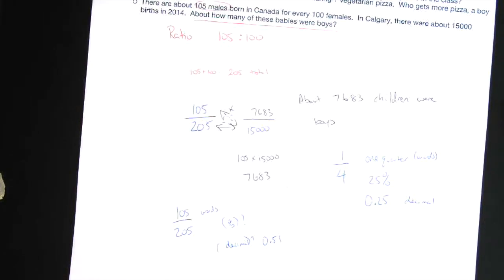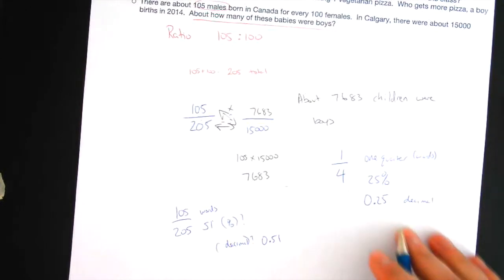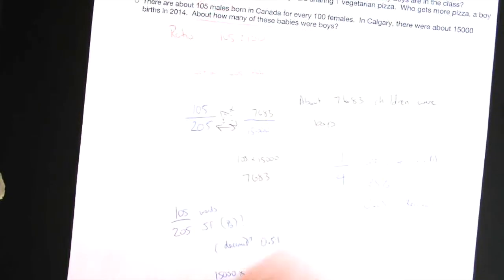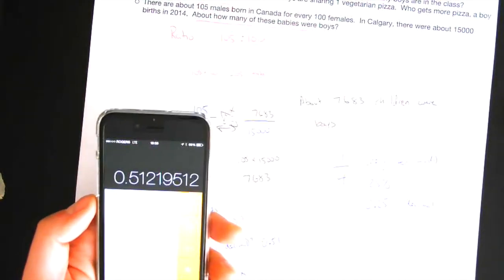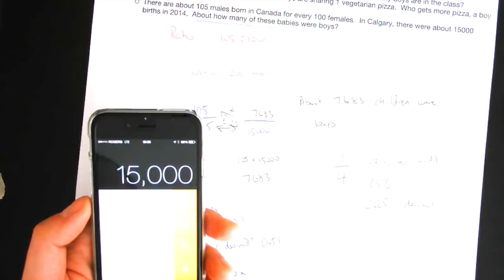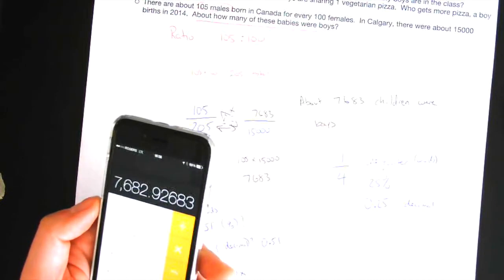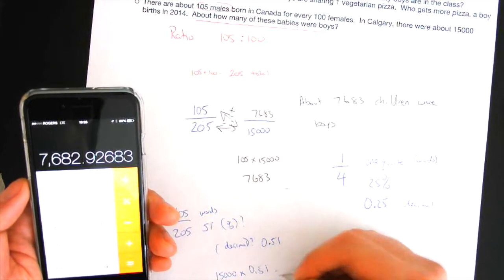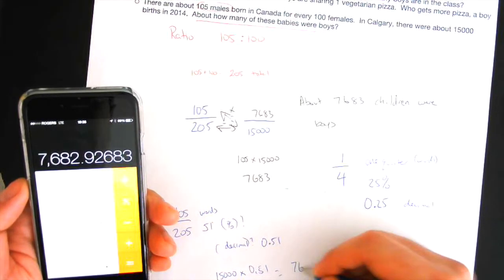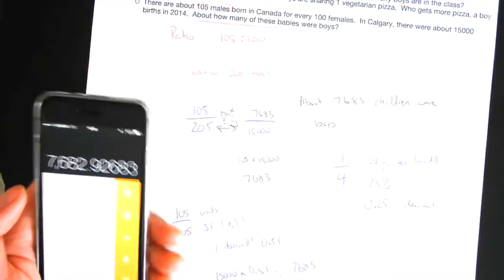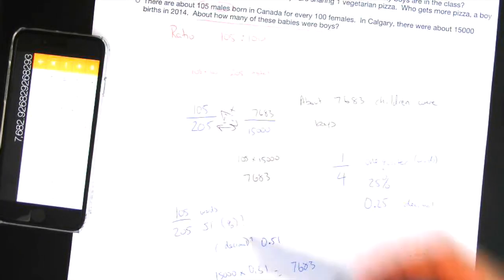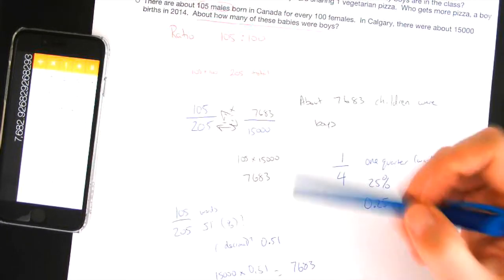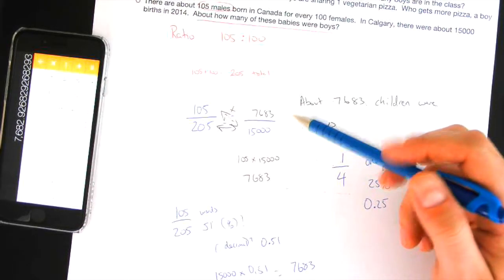So, now, if I took the total number of kids born, 15,000, and I multiplied it by this long answer, I get the same answer. The answer is 7,683. So, if you solve it by finding the decimal first, and then multiplying it by the total, you get the same answer. So, that's the other way of doing it.